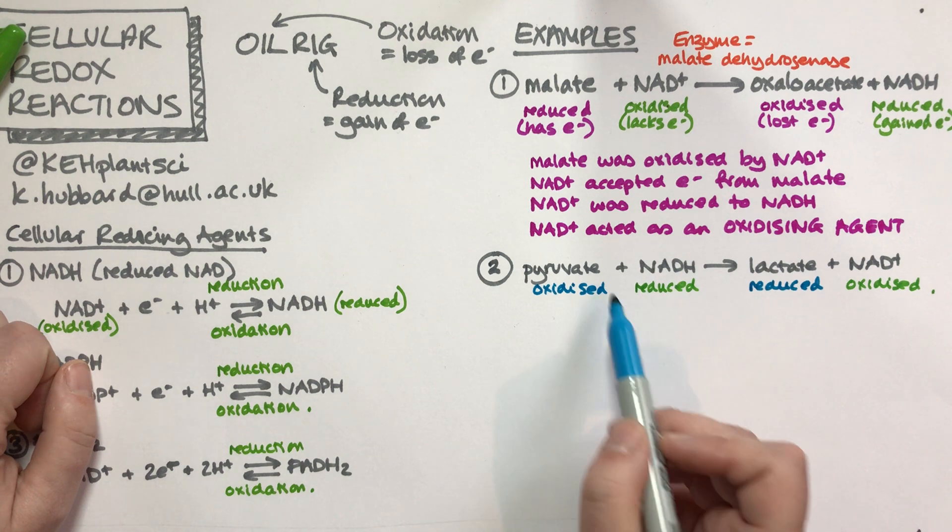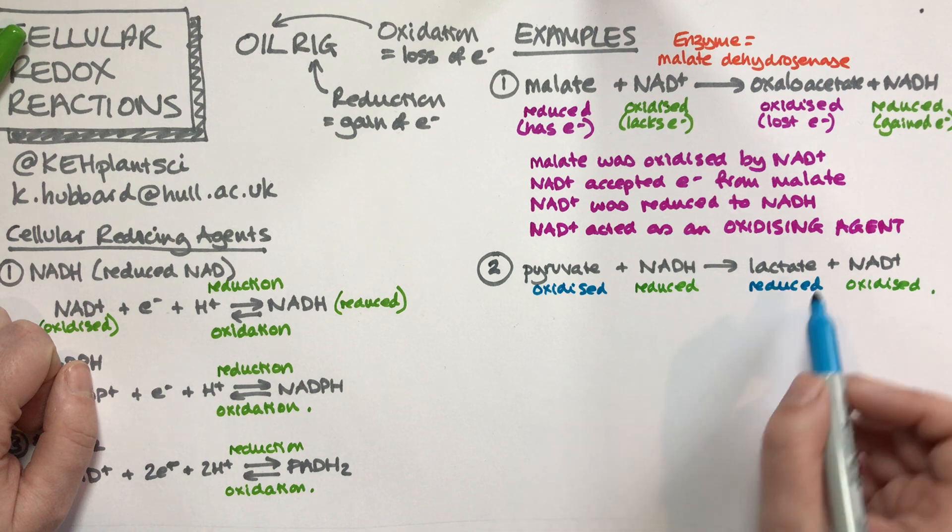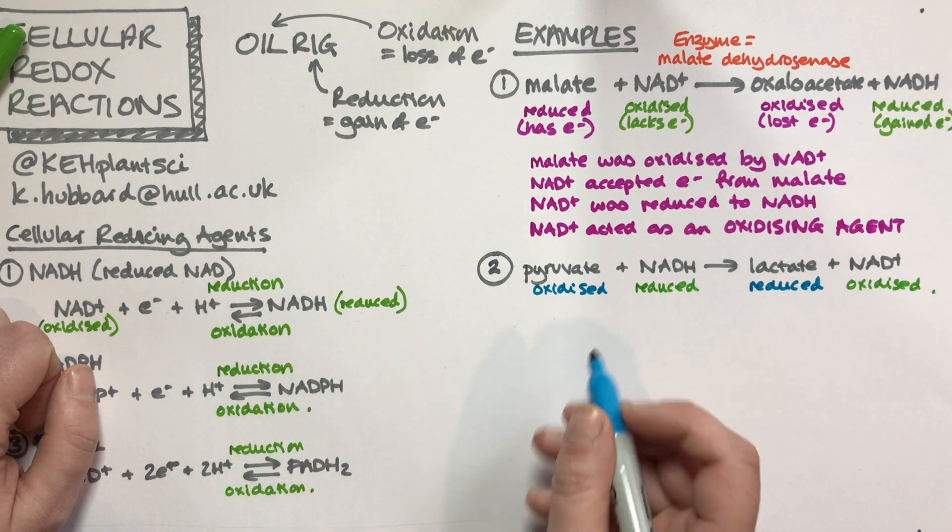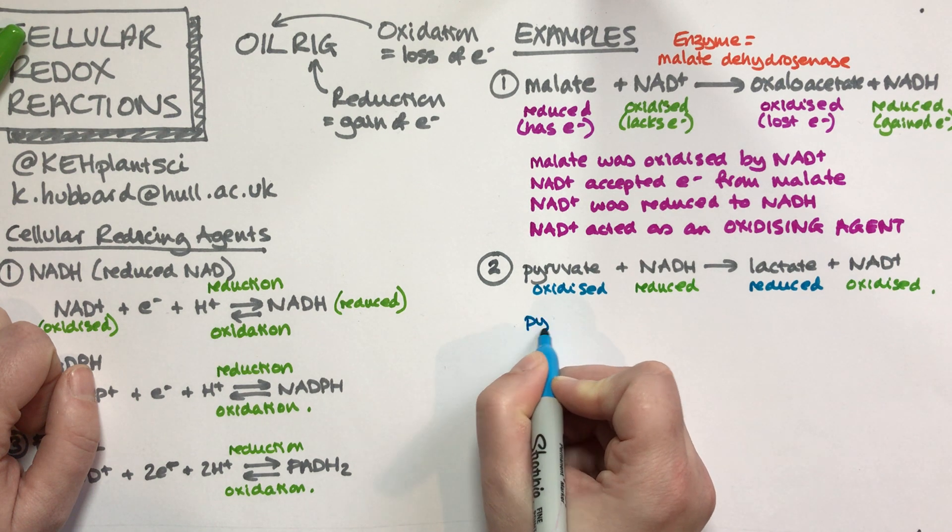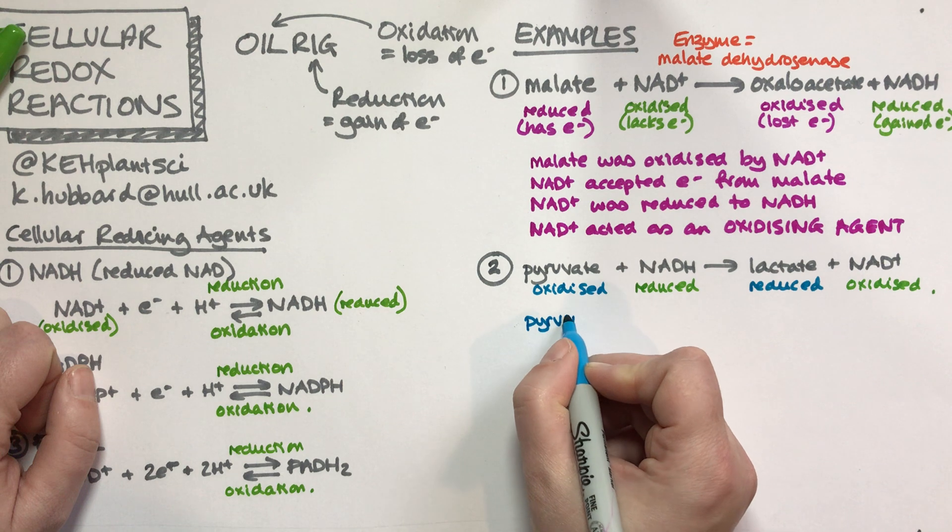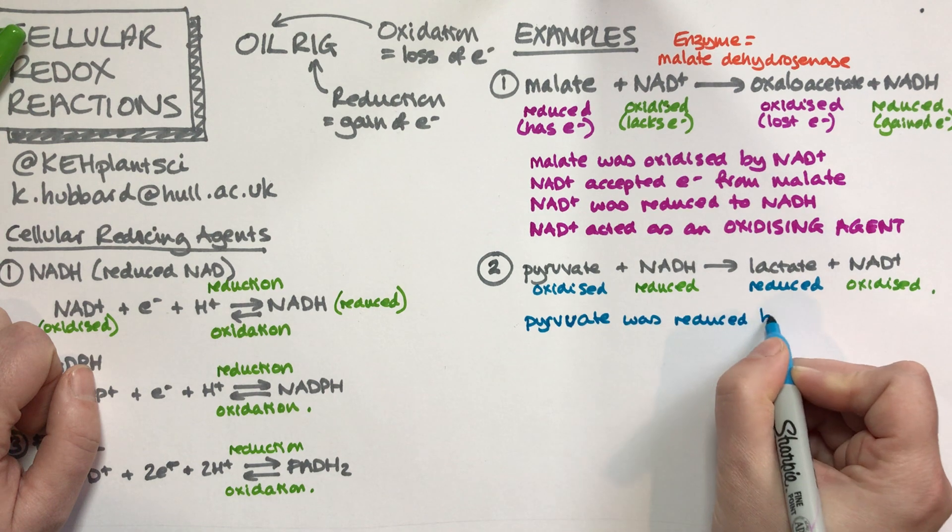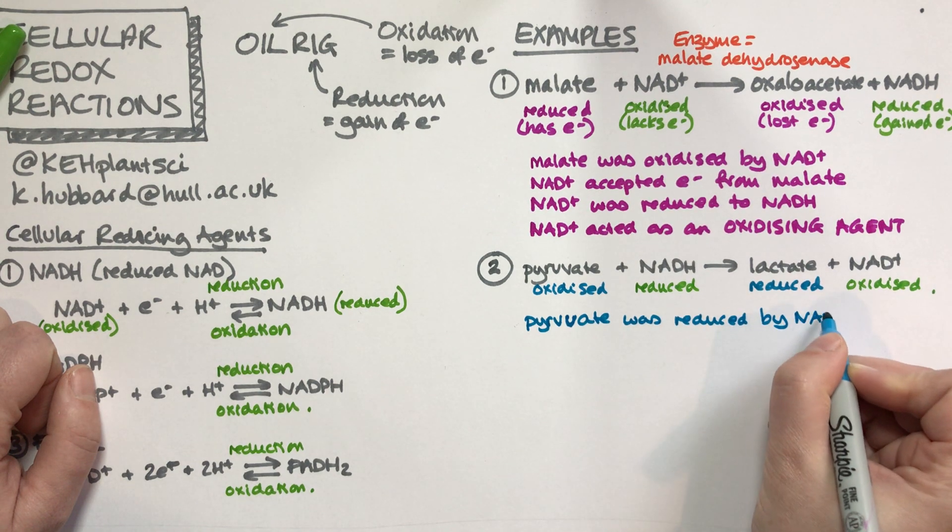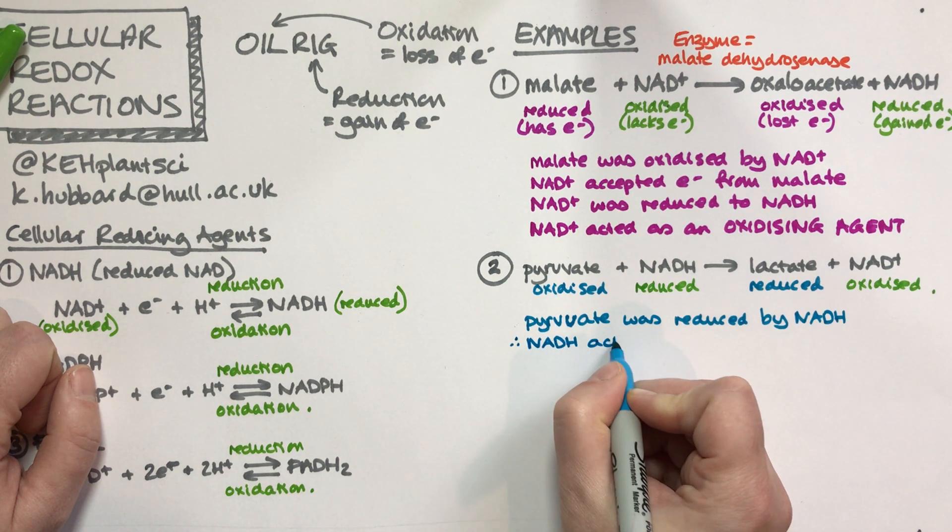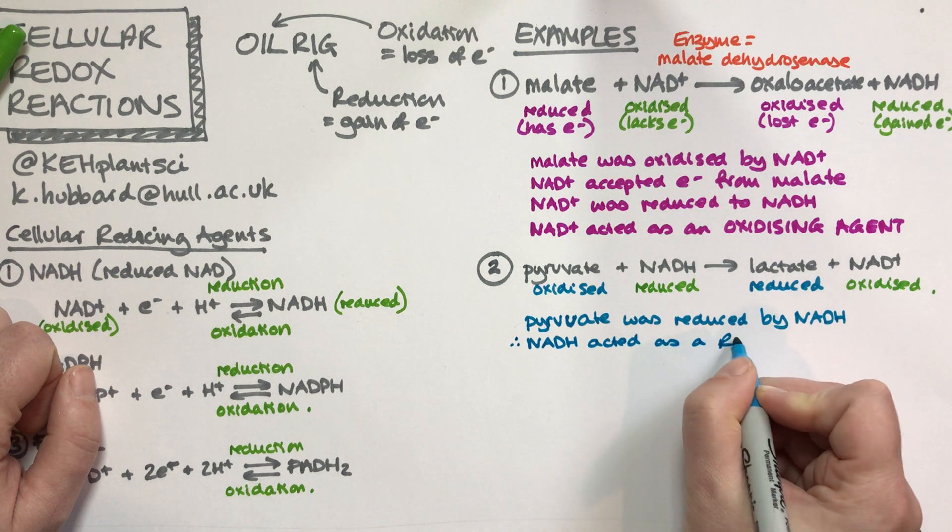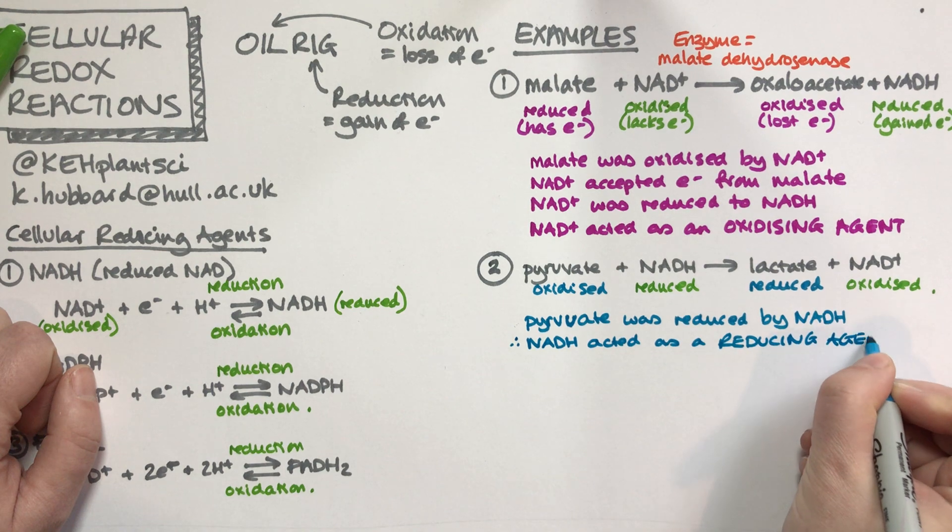In this case, what has happened is NADH has given some of its electrons to pyruvate to make lactate, resulting in NAD+. What can we say here? We can say that pyruvate was reduced by NADH. Therefore, NADH acted as a reducing agent.